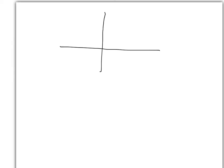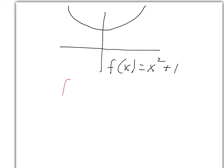Let's start by drawing the graph of this function. f of x equals x squared plus 1. So that looks like this. And we want to know, first of all, what is the image of the set [1, 3]? That means we need to take all of the f of x values as x goes from 1 to 3.